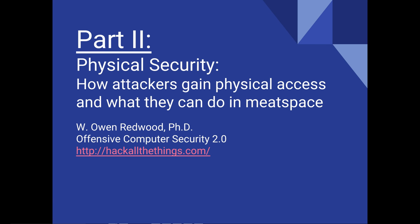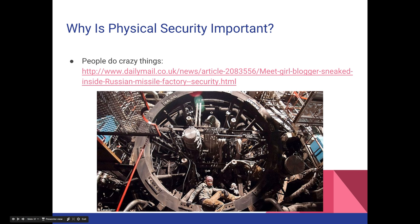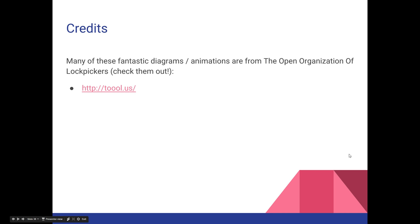Part two: Physical Security — how attackers can gain physical access to your systems and what they can do with them. People do crazy things — there's a story about a girl who keeps a blog about sneaking into industrial sites and taking pictures, with one picture of her inside a Russian missile factory. Imagine instead if this was someone from your competition stealing secrets or sabotaging your facility. Credits to the Open Organization of Lockpickers, TOOOL (tool.us) — they have fantastic diagrams and animations and usually run a village and workshop at DEF CON every year.